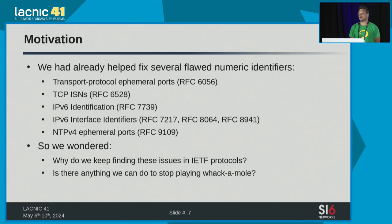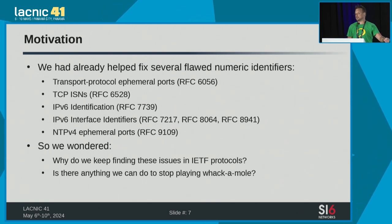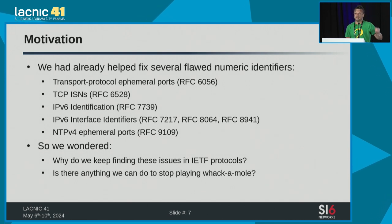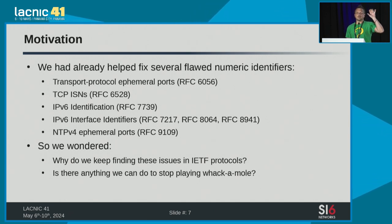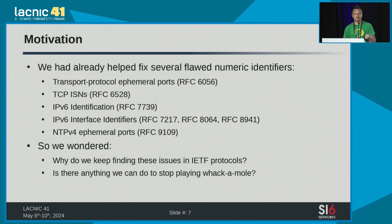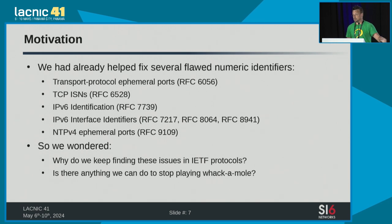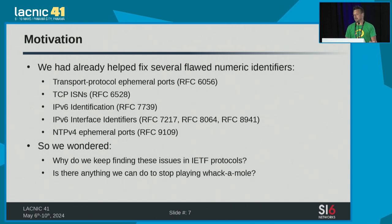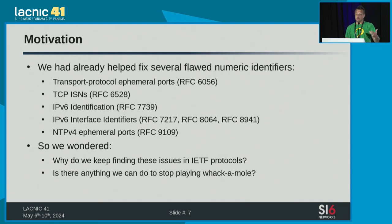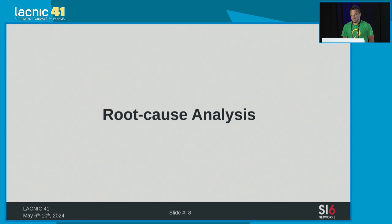Ivan Arce and I had worked on this area, solving problems for specific protocols. On screen you can see some of the specific specifications and patches I worked on to solve these problems. But it was always a reaction — a specification or implementation would have a problem and we'd come running with a solution. So we asked ourselves two things: why did this affect so many different identifiers and protocols for so long, and is there anything we can do proactively to prevent the problem instead of just patching after the fact?